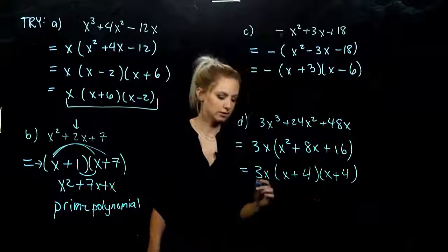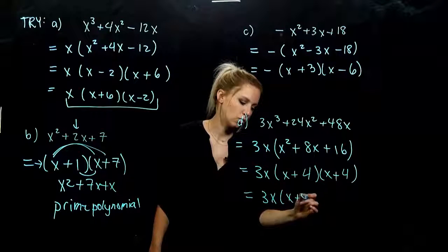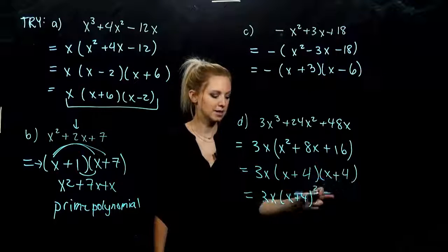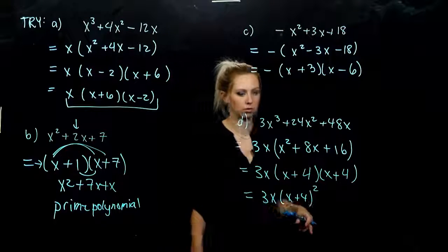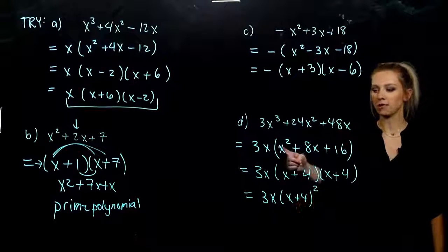But another way to report this is going to be what? 3x times x plus 4 quantity squared. I've got 2 factors, it times itself, 2 times in total. So now we have the skills to be factoring these guys when we have a 1 out on the front.